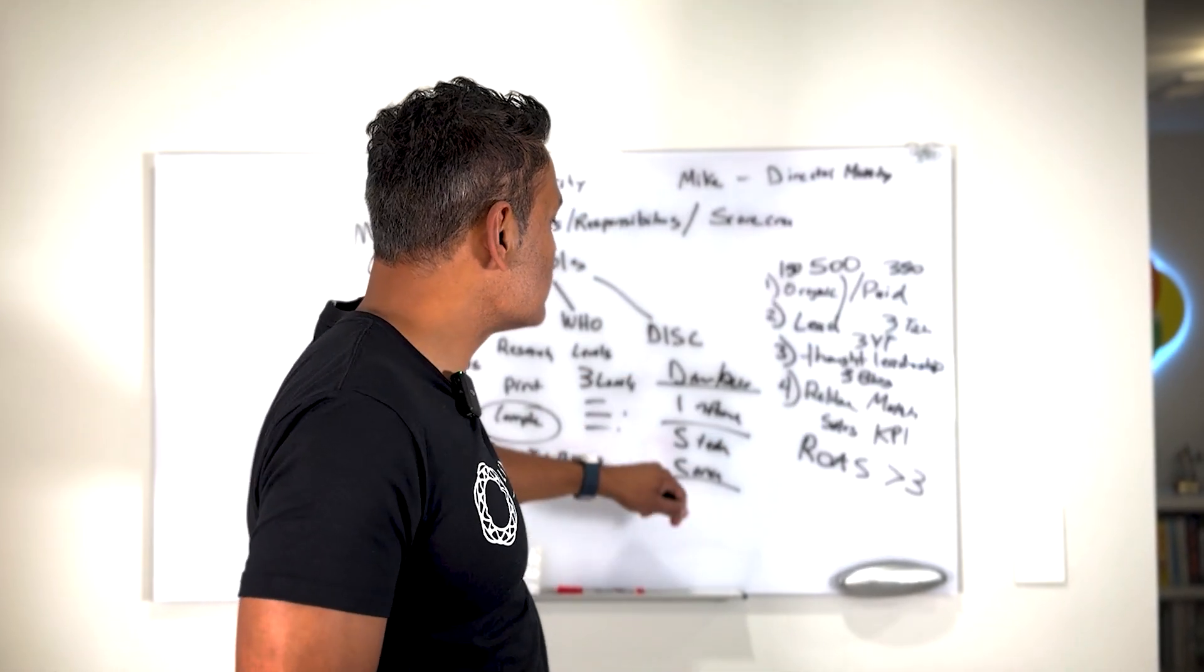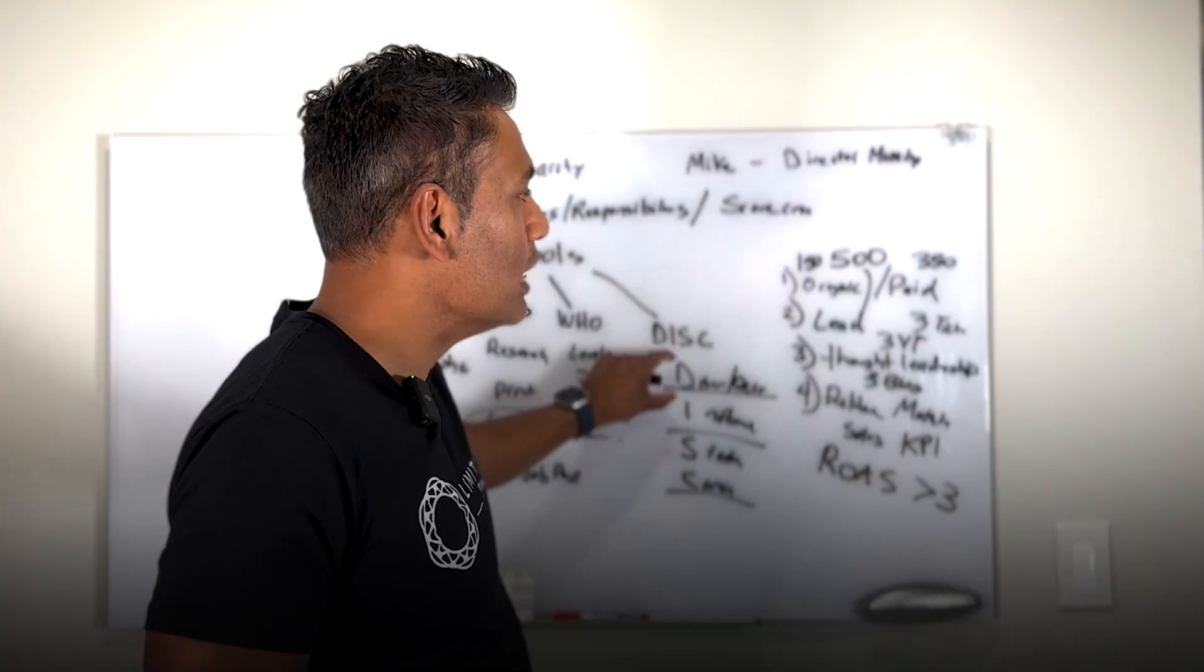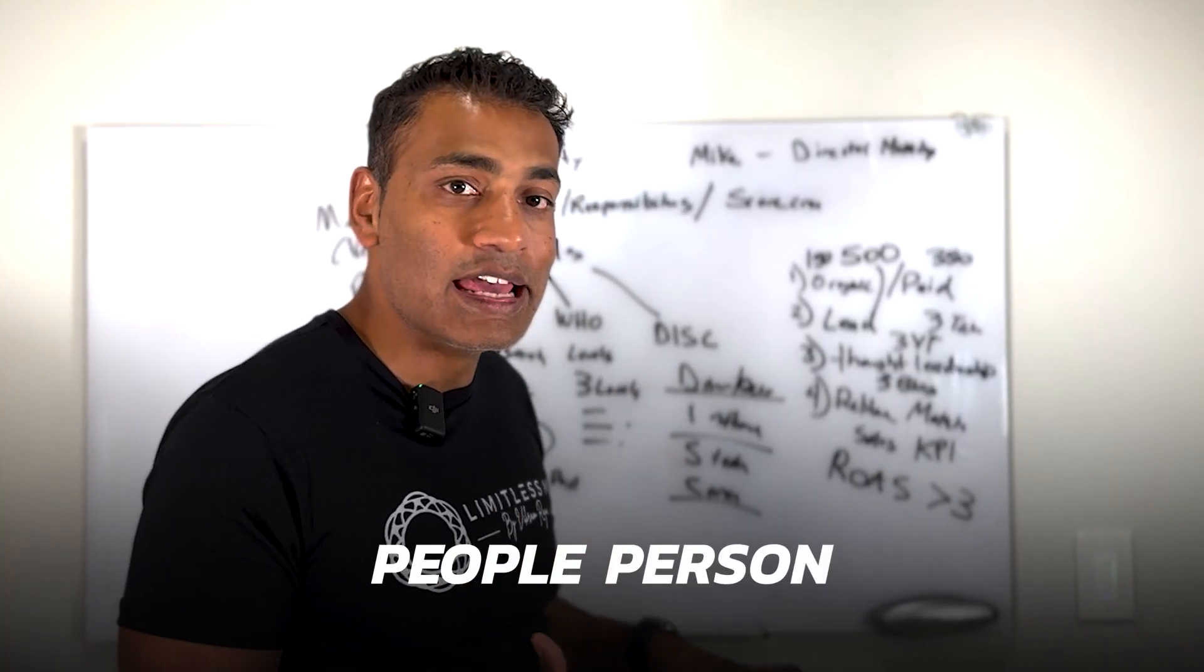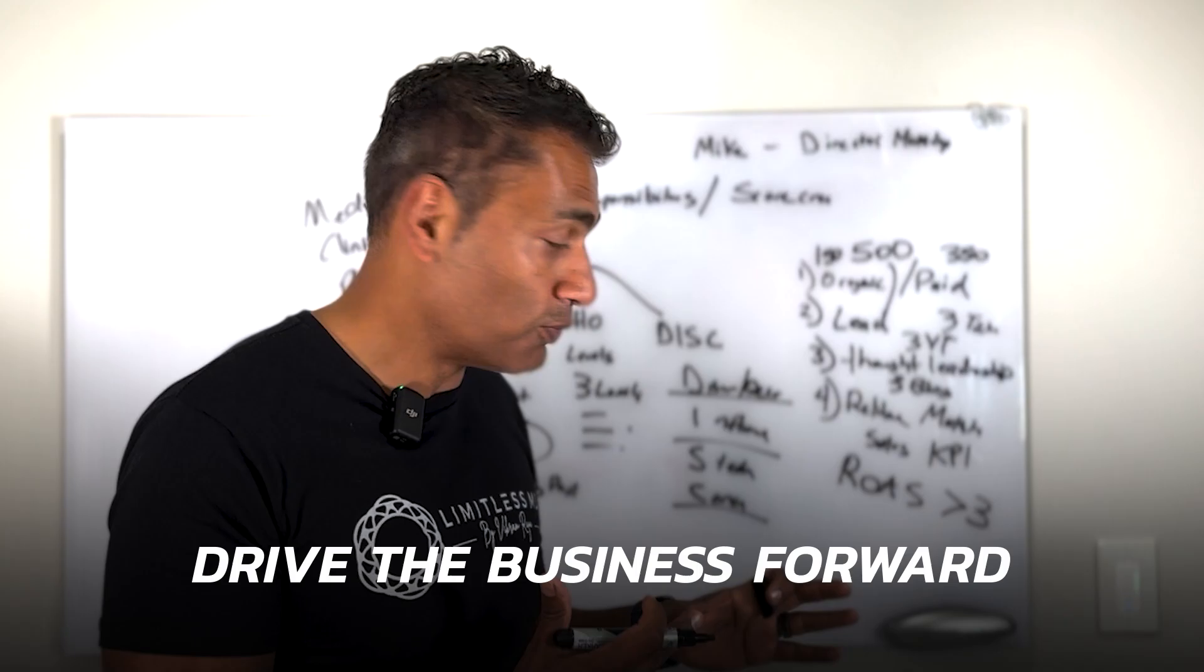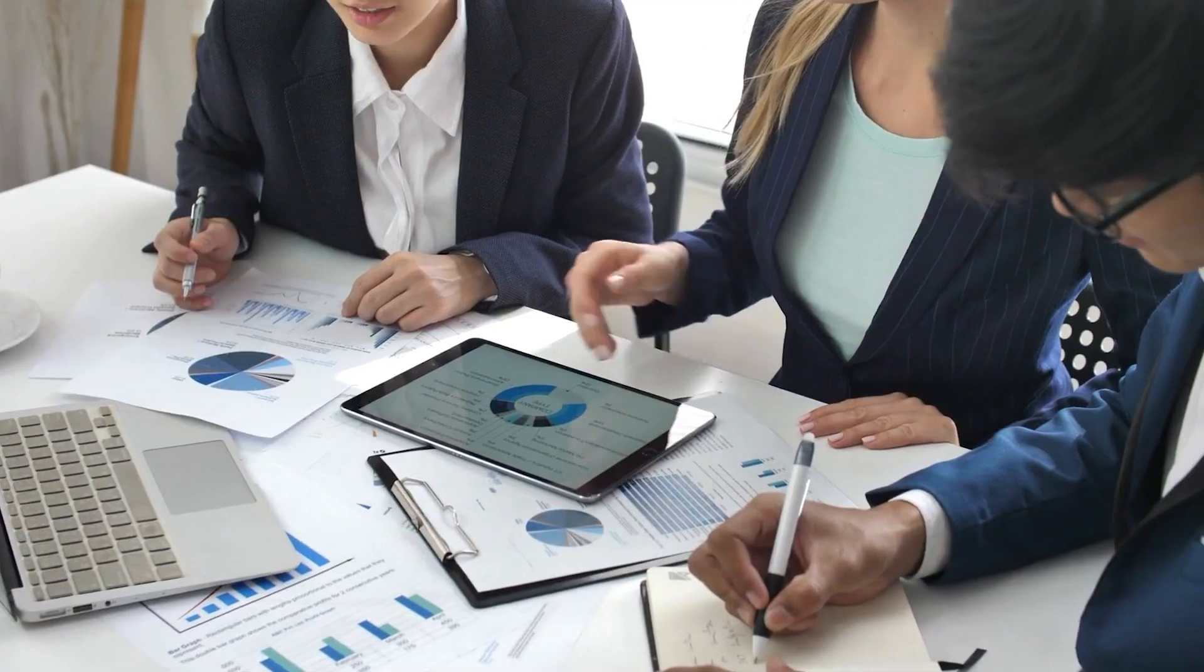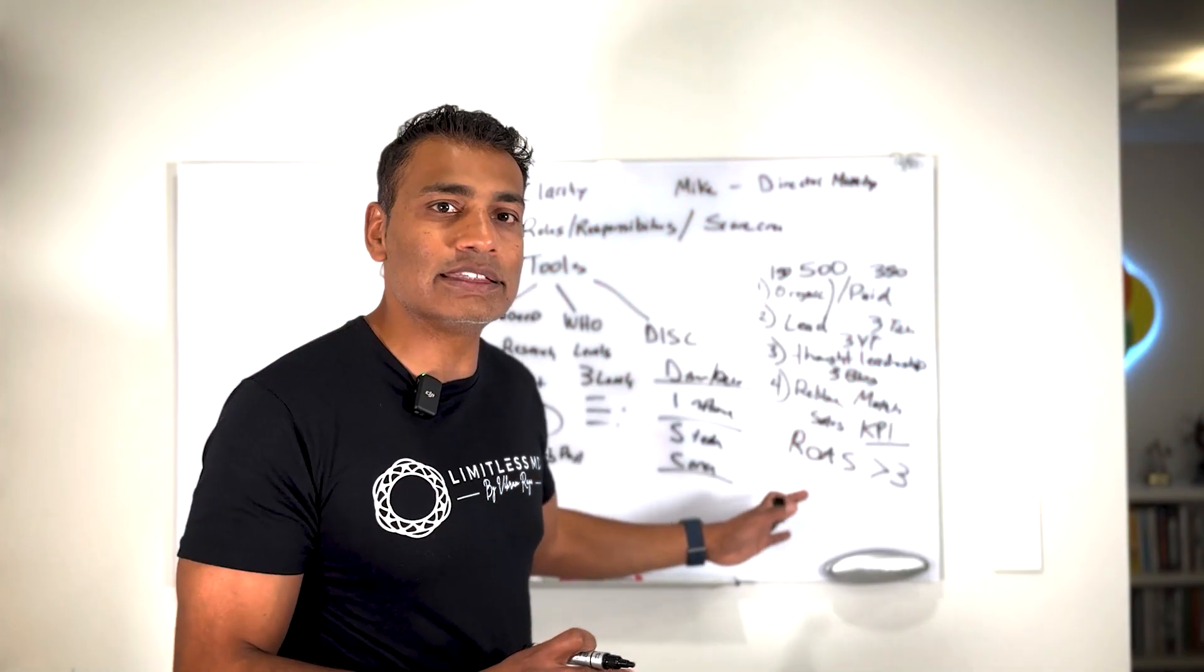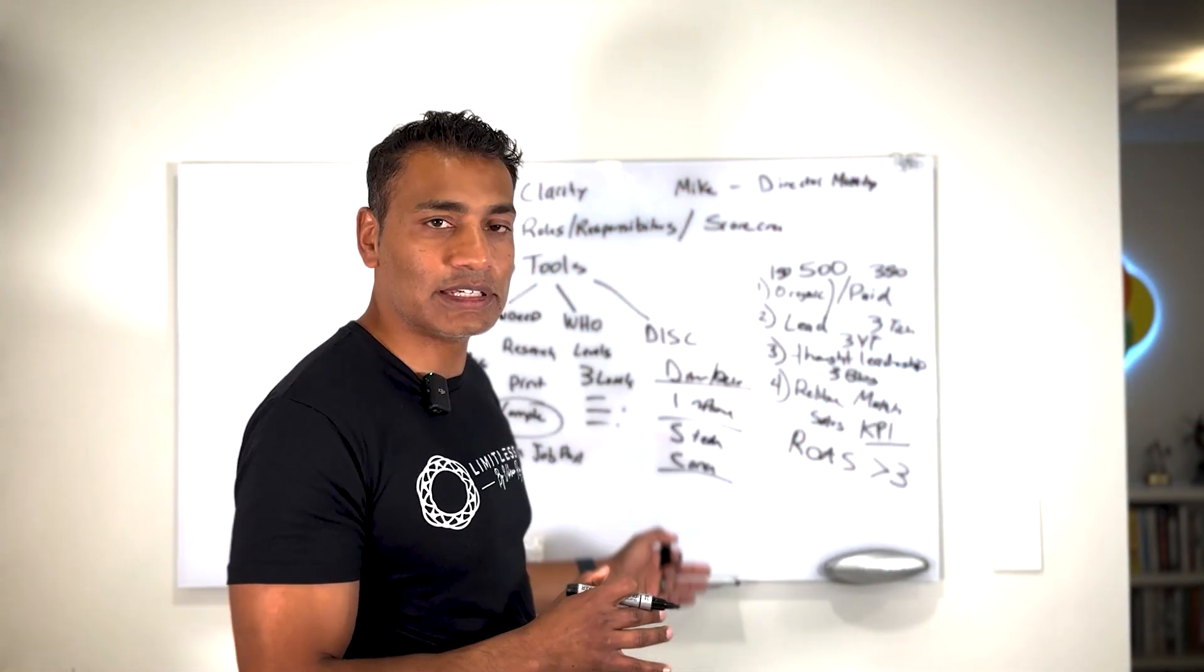Depending on this role, I want someone who's probably either a D or an I. They need one of these two because I want them to be a people person and I want them to really drive the business forward. But I also need a little bit of the SC, the steady fastness and the conscientiousness, because I want them to hit their KPIs. I want them to be data oriented. Otherwise they're going to fall through the cracks and not be able to hit their goals.